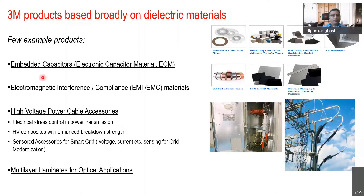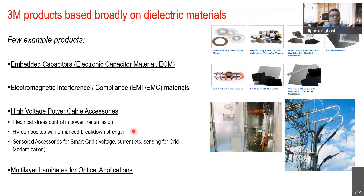Today I'll talk about some products at 3M that are broadly based on dielectric materials. We are not a dielectric-based company — we are a diversified manufacturing company — but many of our products are based on dielectric materials. The first example is an embedded capacitor, which we call Electronic Capacitor Material or ECM. Second, I'll talk about electromagnetic interference or EMI and EMC materials. Third is high voltage power cable accessories, including electrical stress control and high-voltage composites with enhanced breakdown strength. We are also active in sensor accessories for the smart grid.